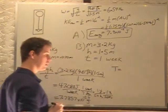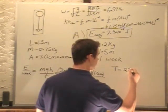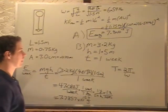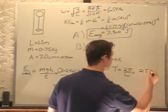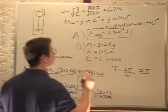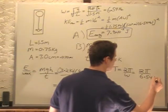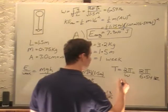Period is just equal to 2 pi over omega. 2 pi over 6.54 hertz.